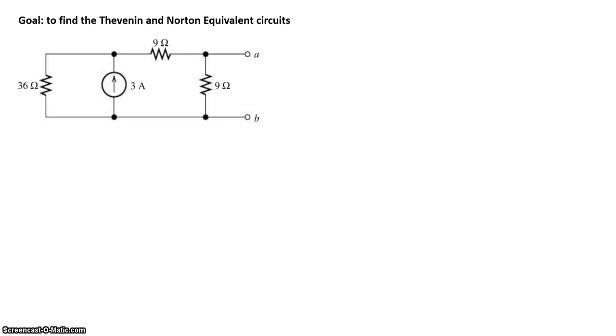In this example, our goal is to find the Thevenin and Norton equivalent circuit. So here's a circuit consisting of a current source, and our goal is to figure out the Thevenin and Norton equivalent circuits seen from terminals A and B.